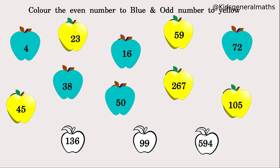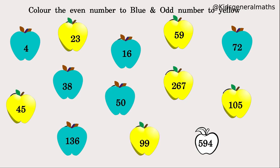Next, 136: it ends with 6, which is an even number, so 136 is an even number — colour it blue. Next, 99: it ends with 9, which is an odd number, so 99 is an odd number — colour it yellow. Next, 594: it ends with 4, which is an even number, so 594 is an even number — colour it blue.